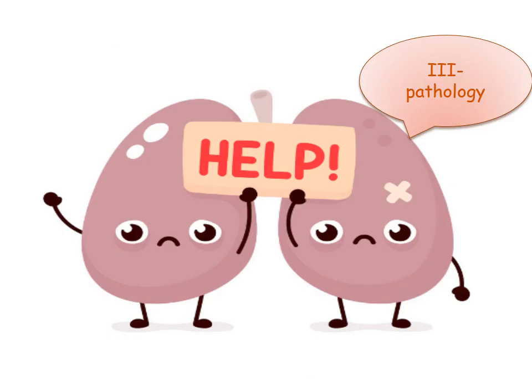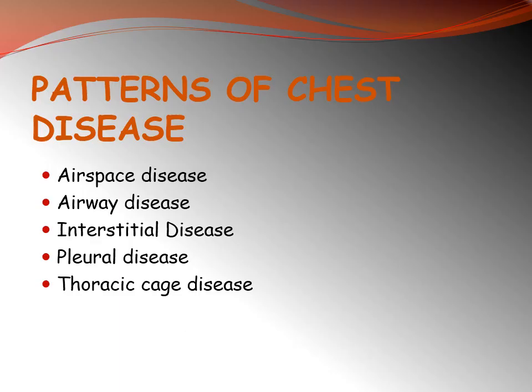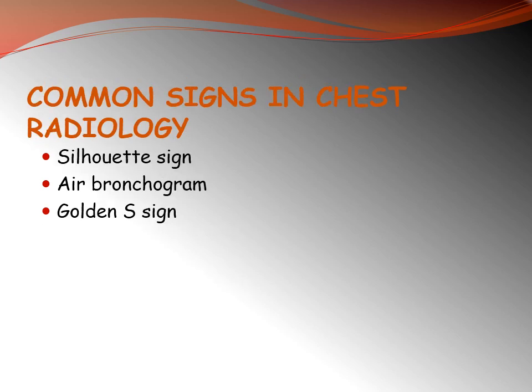What patterns can we detect in chest radiology? The patterns of chest disease include: airspace disease — denoting disease of the alveoli; airway disease — denoting disease of bronchi and bronchioles; interstitial disease of the parenchyma; pleural disease; and thoracic wall disease. There are many signs in chest radiology, but today we focus on three: the silhouette sign, the air bronchogram, and the golden S sign.